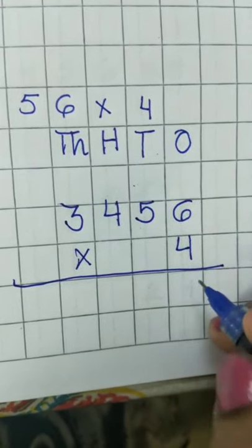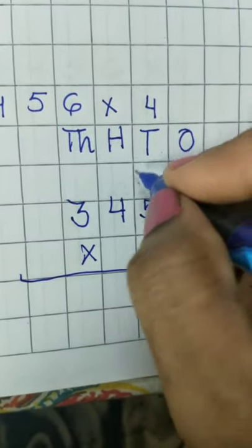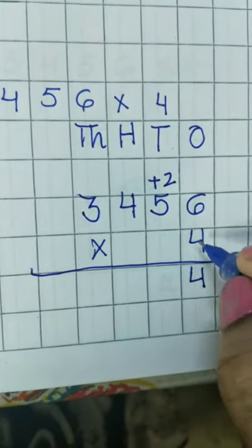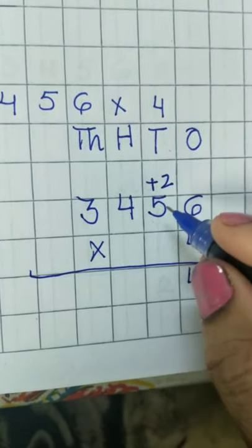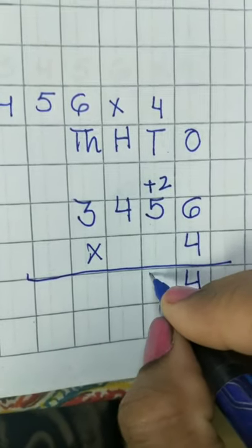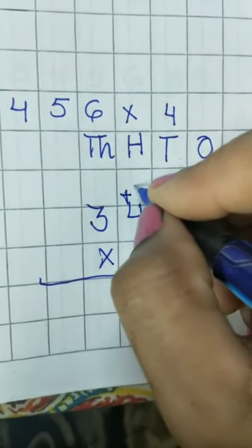4 times 6 are 24. We will write 4 here and 2 will carry. 4 times 5 are 20. 20 plus 2, 22. So we will write 2 here and 2 will carry.